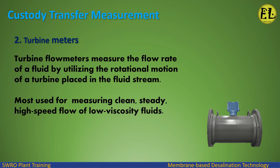Turbine Meters: Turbine flow meters measure the flow rate of a fluid by utilizing the rotational motion of a turbine placed in the fluid stream. They are most used for measuring clean, steady, high-speed flow of low-viscosity fluids.